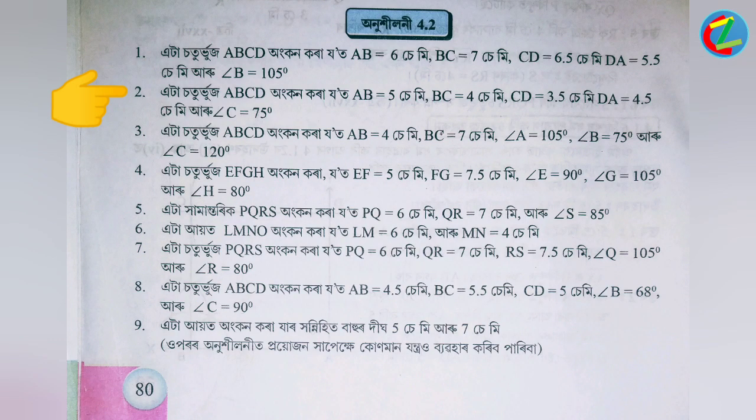This is a data sort of user — quadrilateral ABCD: AB is equal to 5 centimeter, BC is equal to 4 centimeters, CD is equal to 3.5 centimeter, DA is equal to 4.5 centimeter, and the angle is equal to 75 degrees.